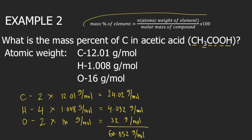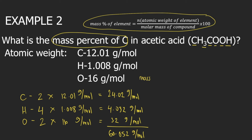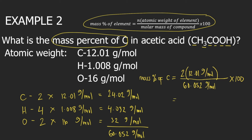Then we use the formula for mass percent, and we are looking for the mass percent of carbon. N is the number of carbons in acetic acid, so that's 2, times the atomic weight of carbon, 12.01 grams per mole, divided by 60.052 grams per mole, times 100. Grams per mole will cancel. We have 2 times 12.01 divided by 60.052 times 100, and this is approximately equal to 40.0 percent. So this is the mass percent of carbon in acetic acid.